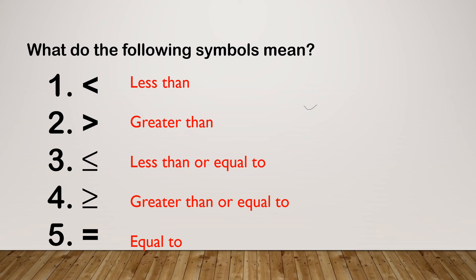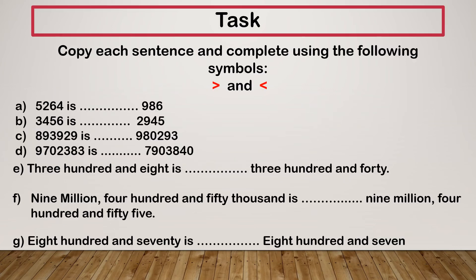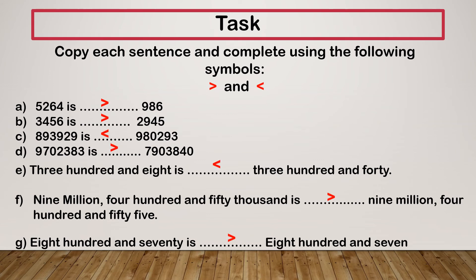Don't forget, the crocodile eats the bigger number — so if I had 72 and 10, my bigger number is the one with the opening. Pause and give these a go. This is some practice of place value from earlier and also some practice of turning words into numbers. Pause the recording and give these a go. I've popped the answers on — mark your own. If there's some you didn't get, jot the right answer down and have another look.